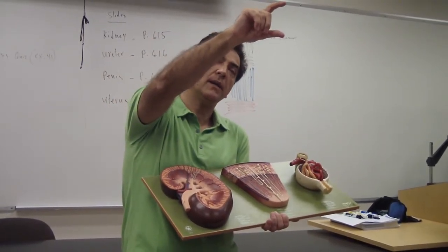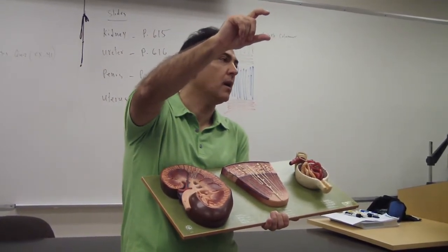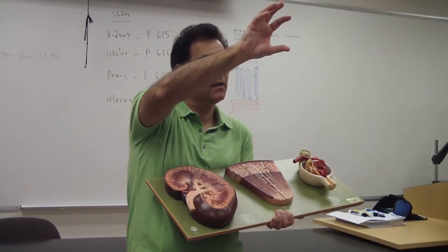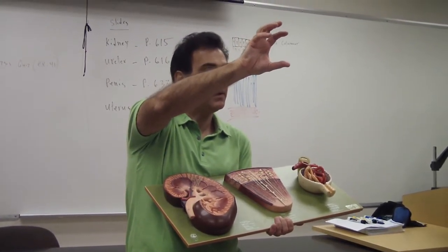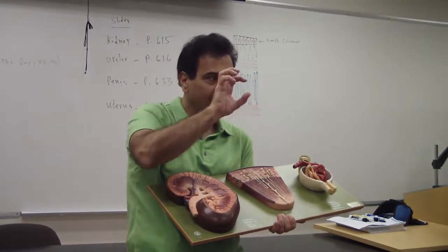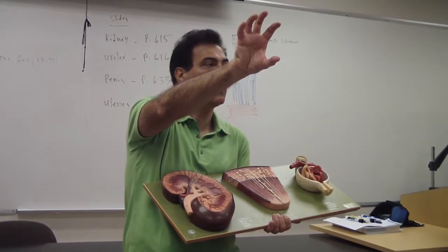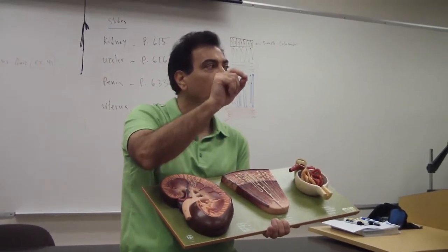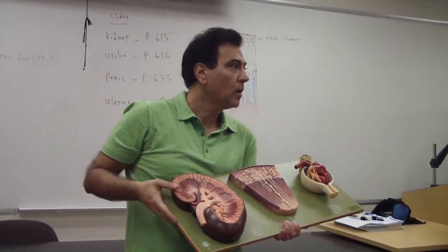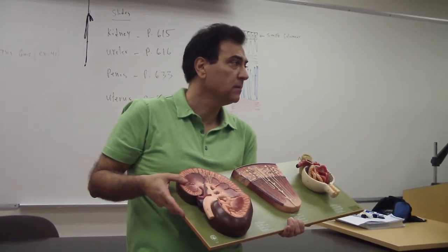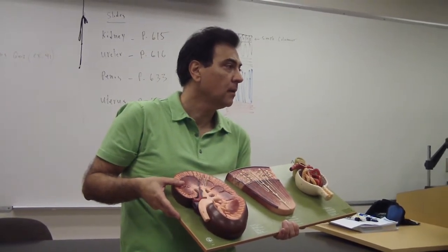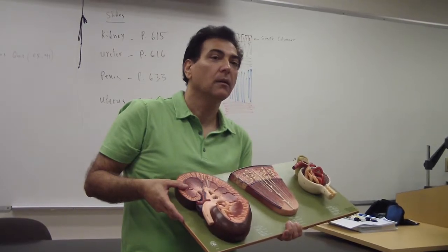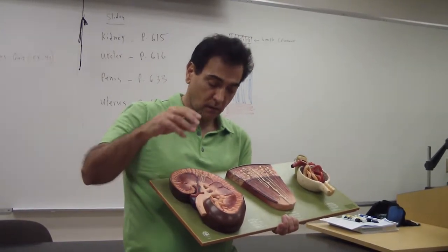And remember, the combination of the Bowman's capsule and the glomerulus capillaries, which go into the mouth of the nephron called Bowman's capsule — together we call them the renal corpuscle. That was one of the questions I posed, right? Renal corpuscle.